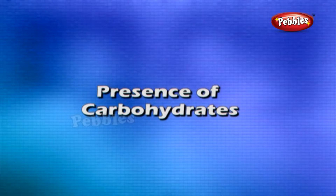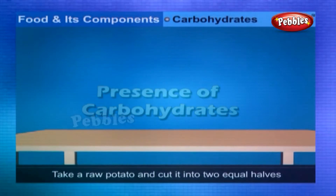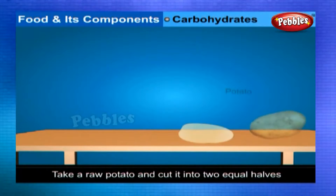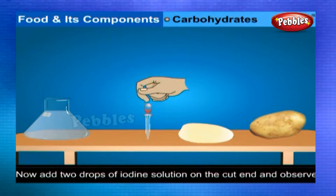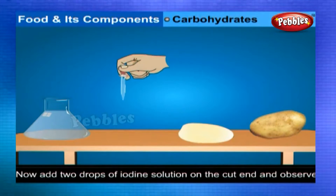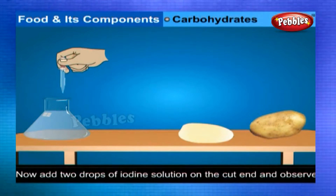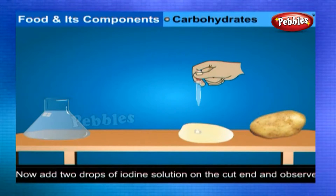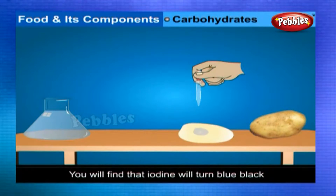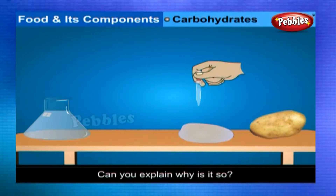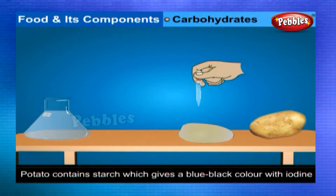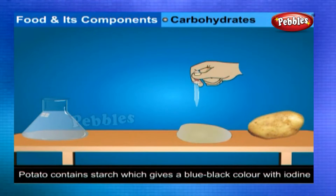Presence of Carbohydrates: Take a raw potato and cut it into two equal halves. Now add 2 drops of iodine solution on the cut end of the potato and observe. You will find that iodine will turn blue-black. Potato contains starch, and starch gives a blue-black color with iodine.